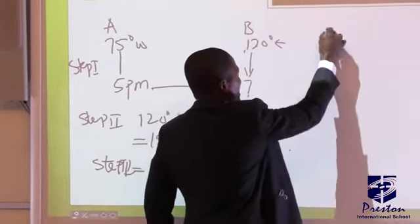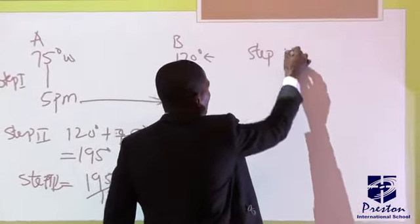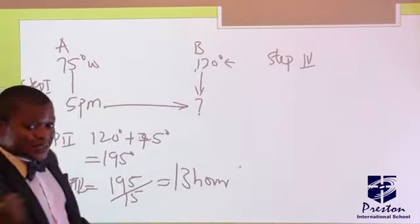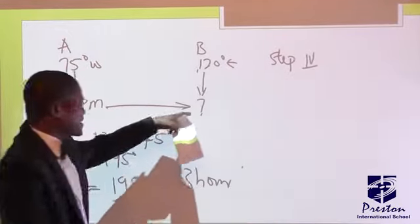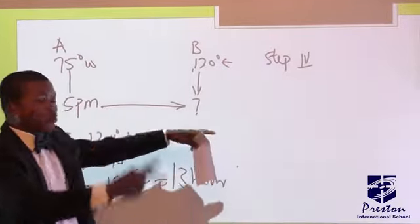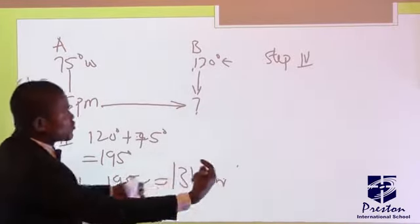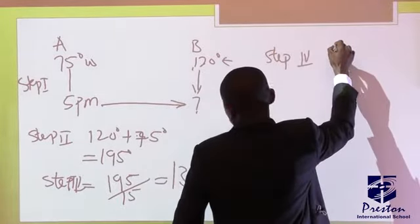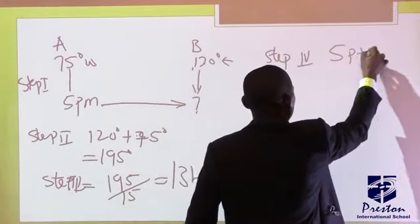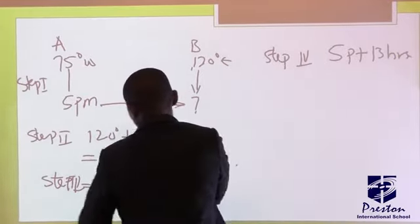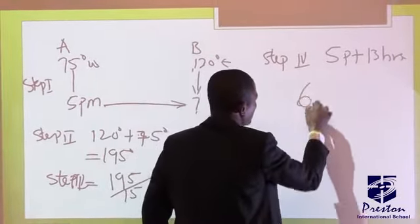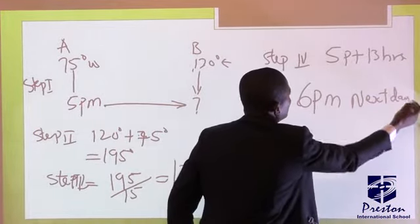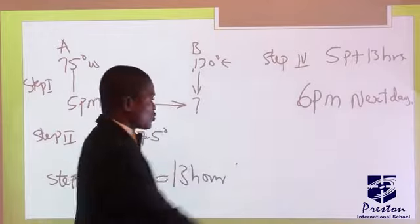Step four: you adjust the time. Since the arrow was pointing to the right, you are going to add the calculated hours to the given time. But if it was pointing to the left, you would subtract from the given time. Finally, that is 5 p.m. plus 13 hours. The time in the other location will be 6 p.m. next day.